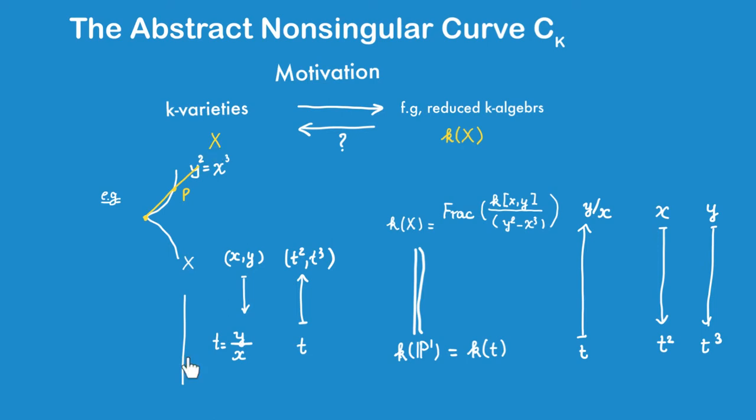So X and P1 are birational. They have the same function field, but they are actually not isomorphic, and you can check that by checking their coordinate ring. The coordinate rings are not going to be isomorphic. The details will be discussed in another video, which I will try to link in the description.